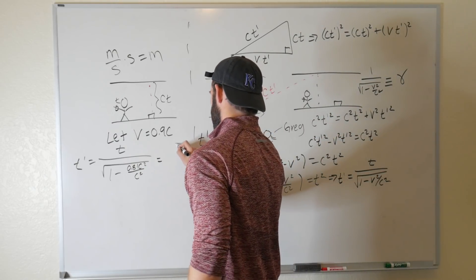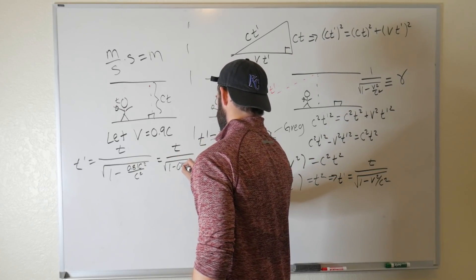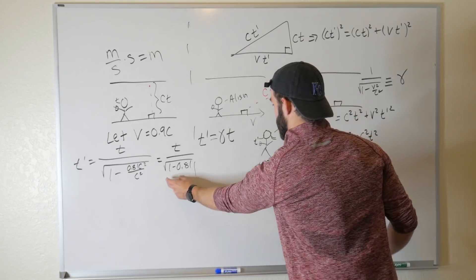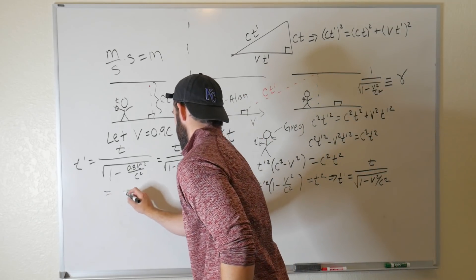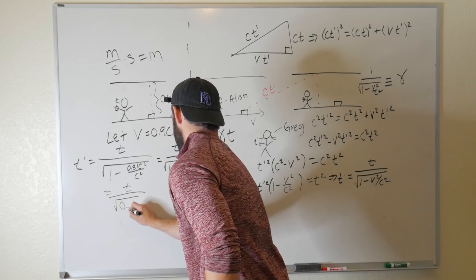which is equal to T over the square root of 1 minus 0.81, which is equal to T over the square root of 0.19,